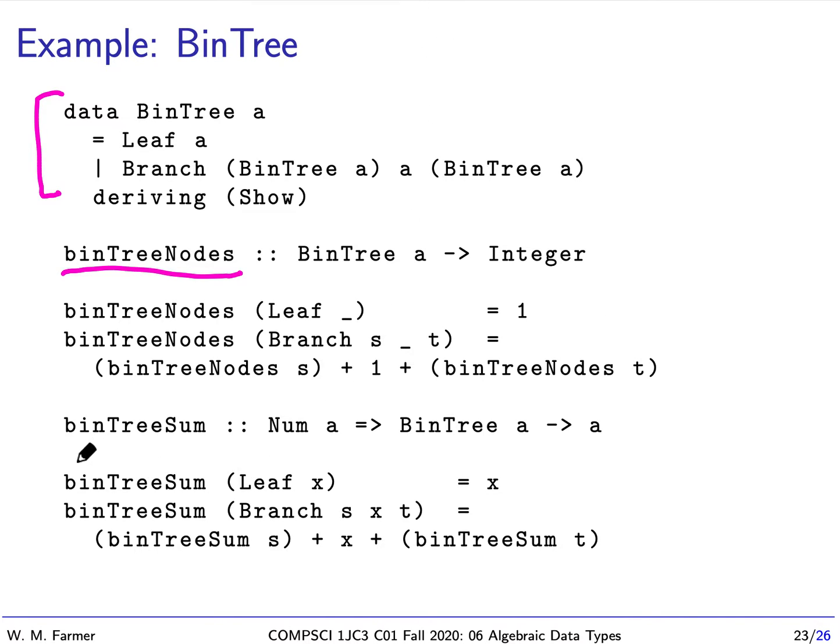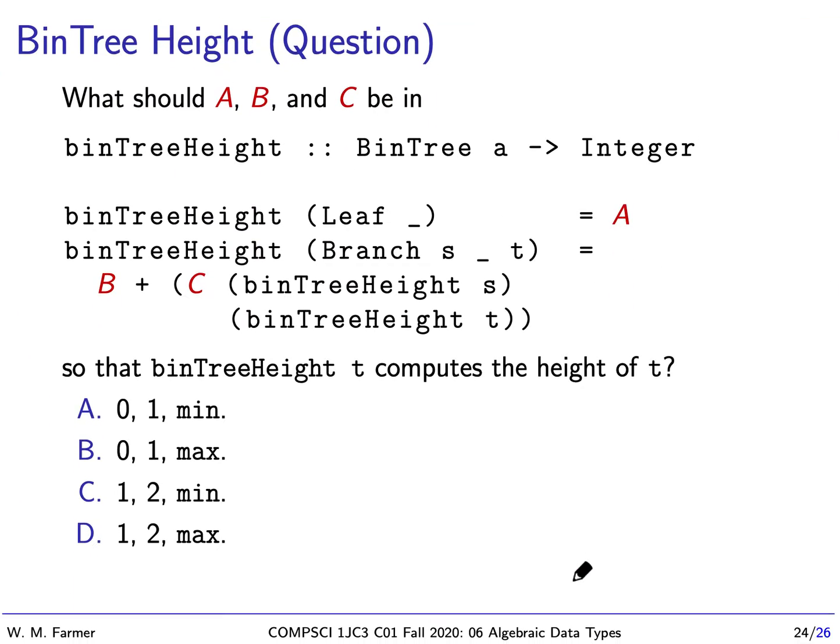So similarly, we can define bin tree sum. It's going to be the sum of all the values in the tree if our type is a num value, our num type. So if a is a num type, we're going to take a bin tree of that type, and then we're going to add up the values. And so we have two patterns. We can have a leaf tree and a branch tree. For the leaf tree, we just get x. For the branch tree, we get the sum of the left, plus x, plus the sum of the left.